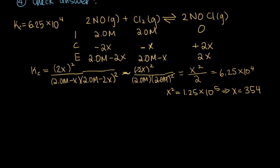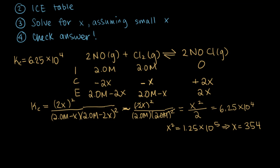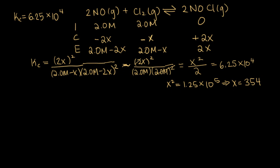Now we check our answer. We said the change in concentration is 354 — that clearly doesn't make sense because it gives us negative concentrations for NO and Cl2. That's bad. Also, we assumed x is a lot smaller than 2, but we got x equals 350, which is clearly not smaller than 2. So skipping step 1 was bad. Let's give this another try.